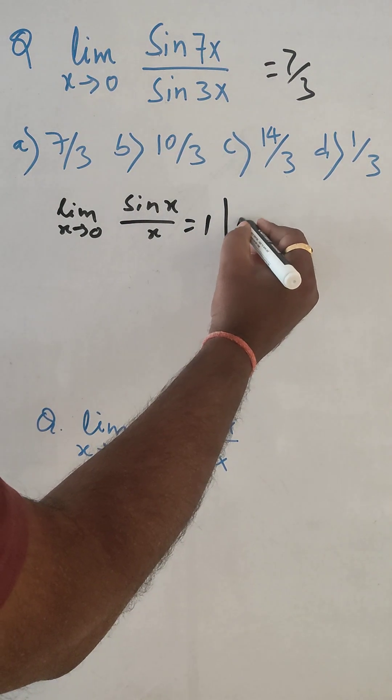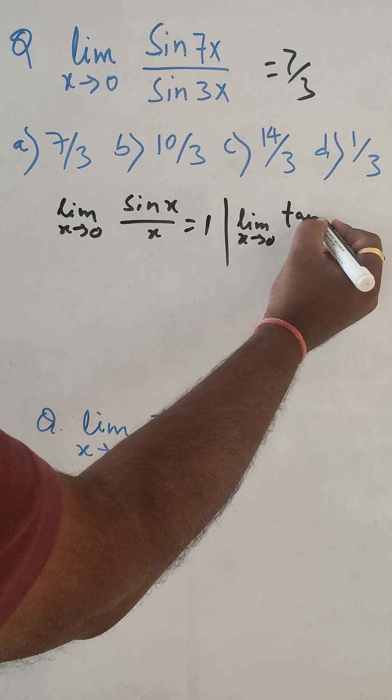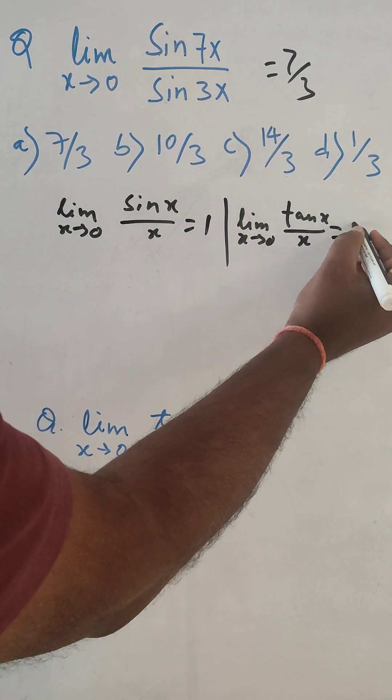Similarly for the tan, if limit x tends to 0, tan x divided by x is equal to 1.